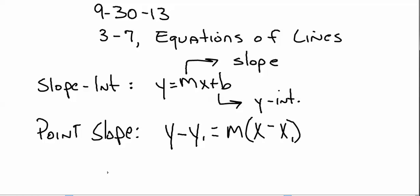What if you're given two points on the line? You would use the two points to find the slope and then use one of the points to write the equation — point-slope form.